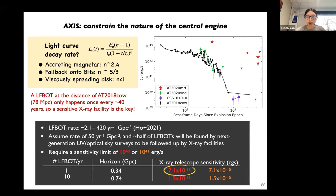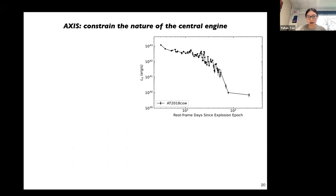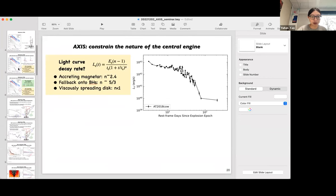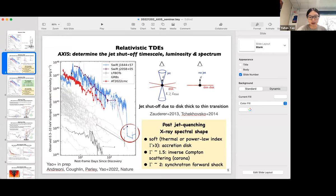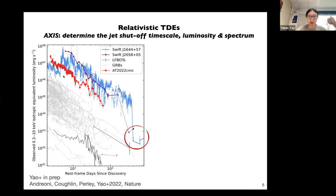For the two science cases highlighted here, a very rapid response of under an hour is probably not necessary, but day-timescale response would be required because—as seen in the case of AT2018cow—Swift got to the source two to three days after discovery, and the early-time data is definitely very different from the late-time evolution. For relativistic TDEs we would benefit from our-timescale response, because in the case of Swift J1644 the early-time X-ray has very dramatic variability which people interpret as precession. With hour-timescale response we would be able to catch that, but that also requires even earlier discovery.